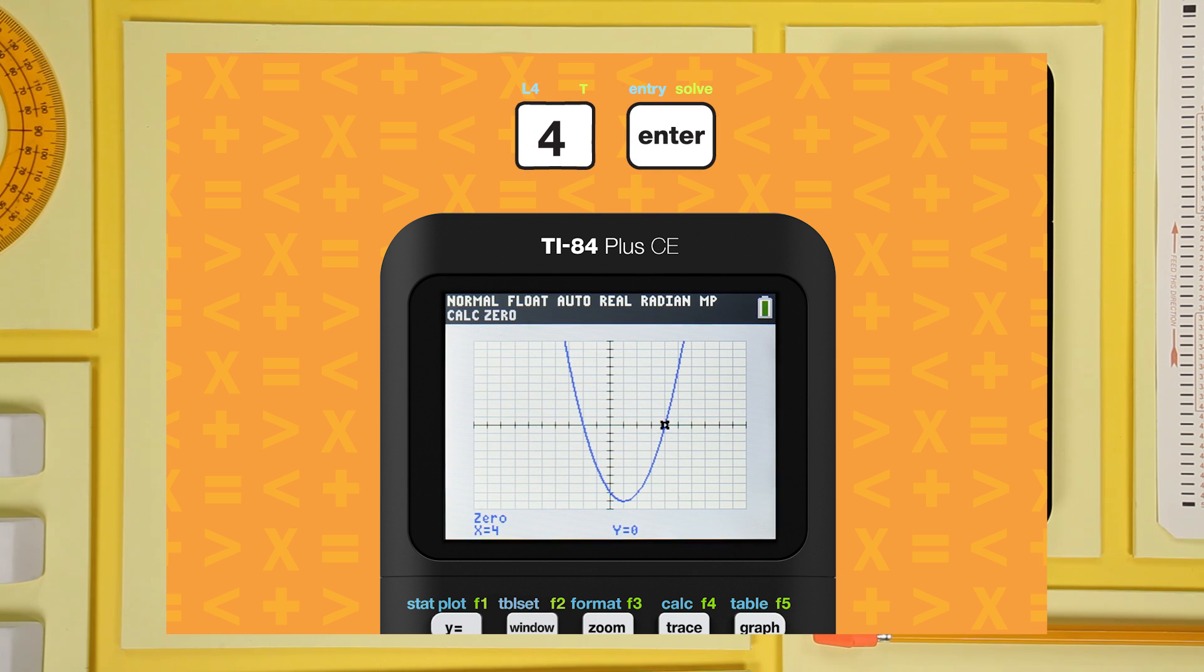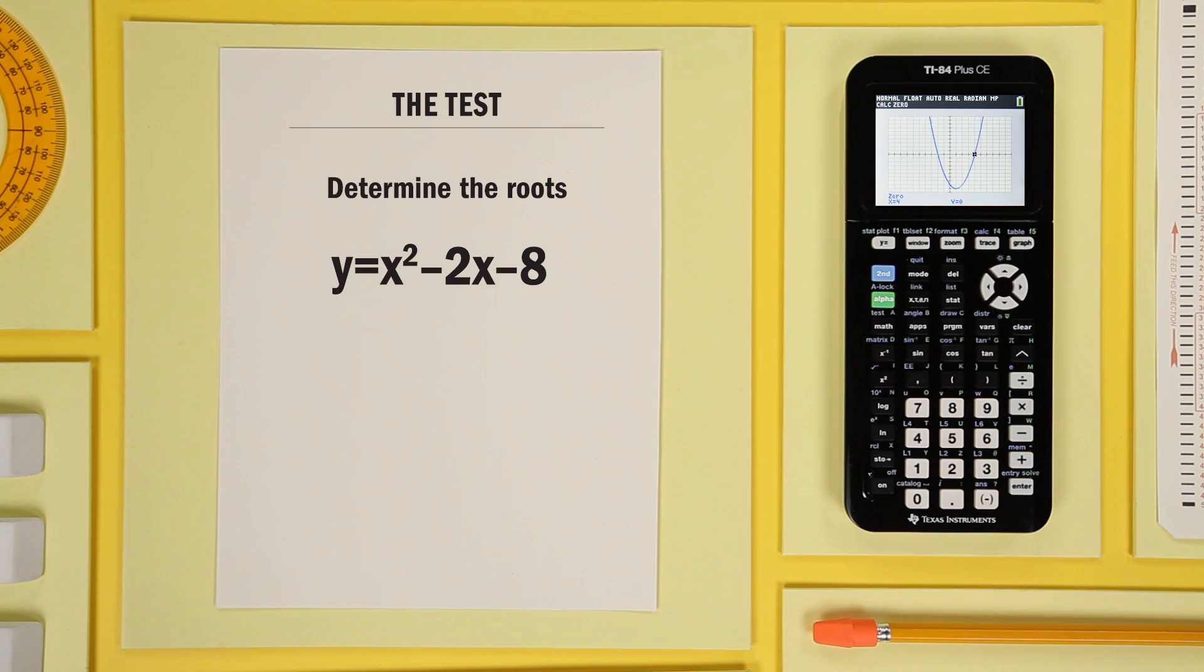The second zero is at x equals 4. Alright, the roots are negative 2 and 4. Let's look at another example. I'll go through it a little faster this time.